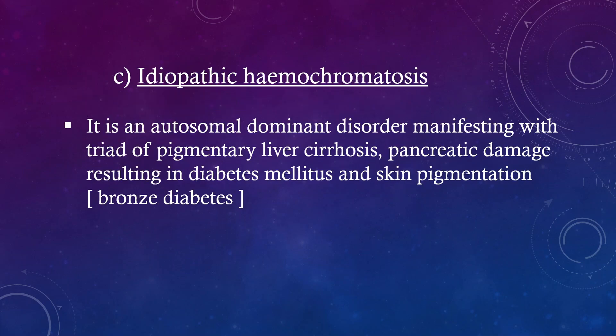Next, Idiopathic Hemochromatosis. It is an autosomal dominant disorder manifesting with a triad of pigmentary liver cirrhosis, pancreatic damage resulting in diabetes mellitus, and skin pigmentation — also known as bronze diabetes.